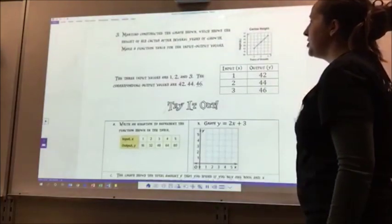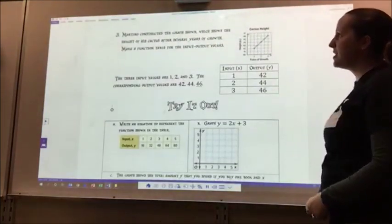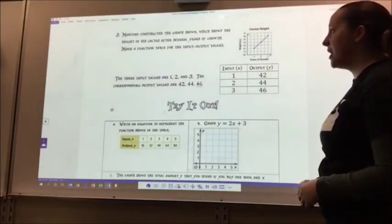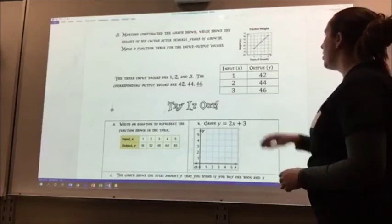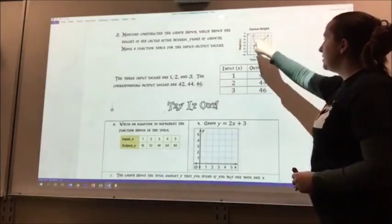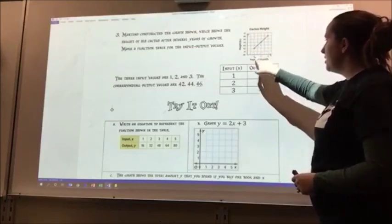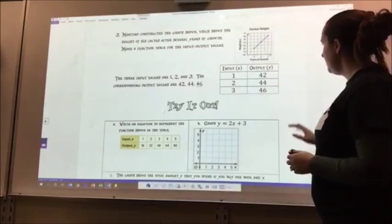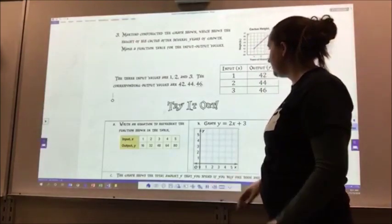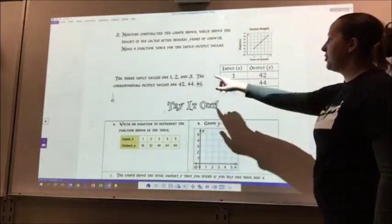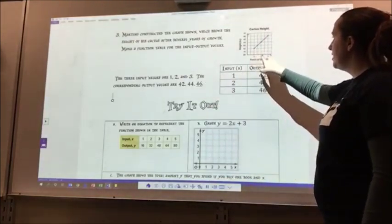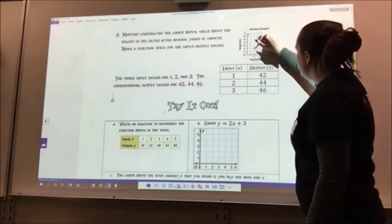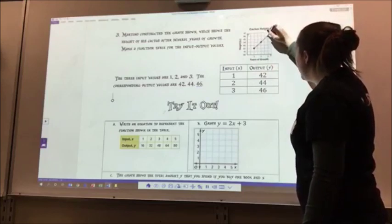Number 3 says, Martino constructed the graph shown, which shows the height of his cactus after several years of growth. Make a function table for the input-output values. Here is my cactus height, here is my graph, years of growth. So it grew 1, 2, 3 years, and how high it grew, there are little points. There are 3 input values: 1, 2, and 3. I just went along here in my points. Here is my first point, my second point, and my third point.